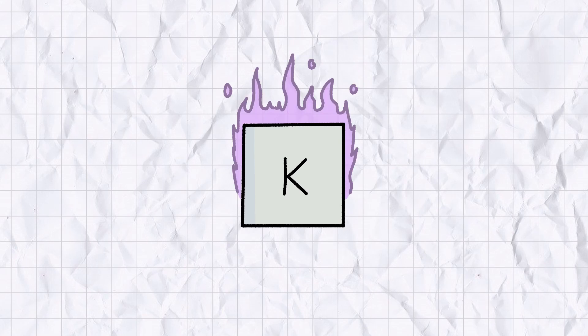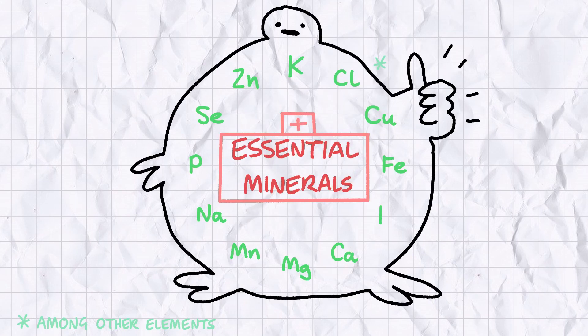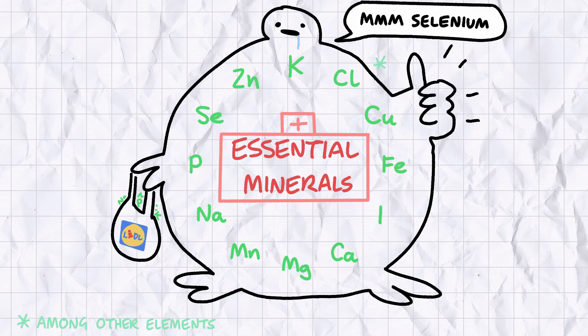Despite being an incredibly reactive metal in its pure form, potassium ions play an incredibly important role in human health. Potassium is what's known as an essential mineral, an element that humans need for our bodies to function properly, but one that we can't make on our own, so we have to make do with cramming them in our cake holes.